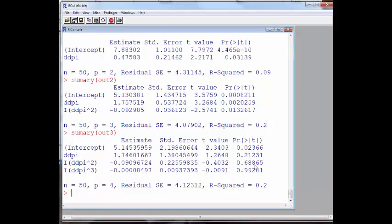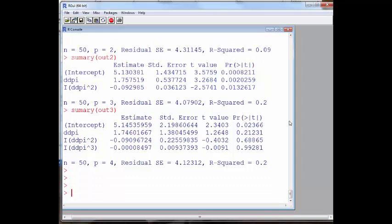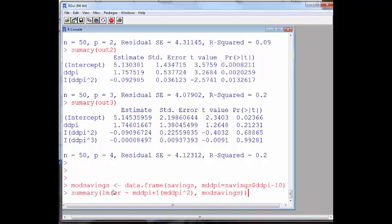To see the effect that this, that doing something like that can have, consider that in your book there in Fairway, he says, consider taking a, consider shifting that DDPI variable by 10 units. Subtracting 10, that is, from that variable. And I'm going to call my new, I'm going to make a new data frame called mod savings for modified savings. It's going to be the data frame of savings.